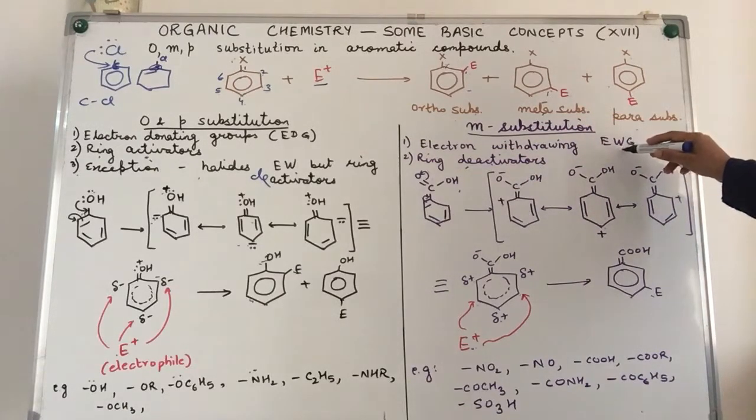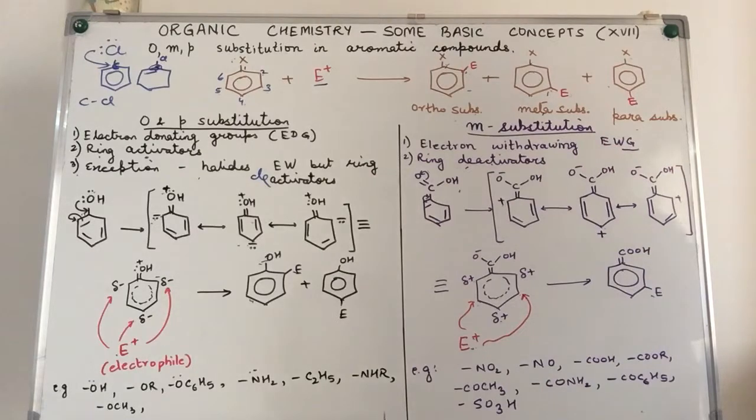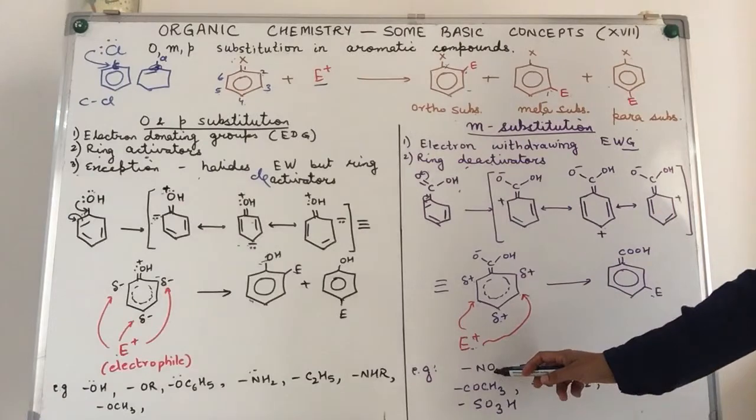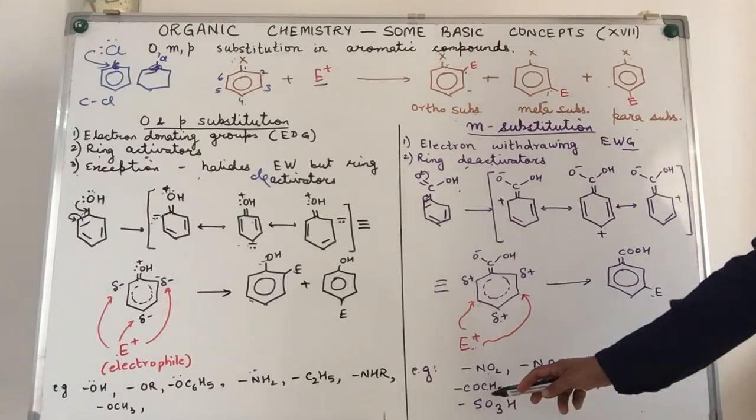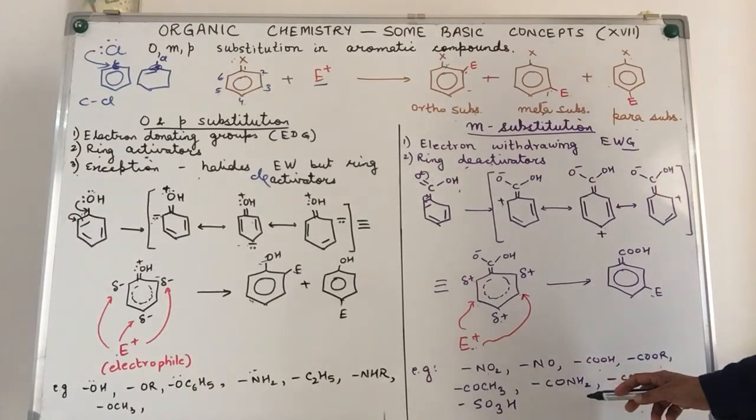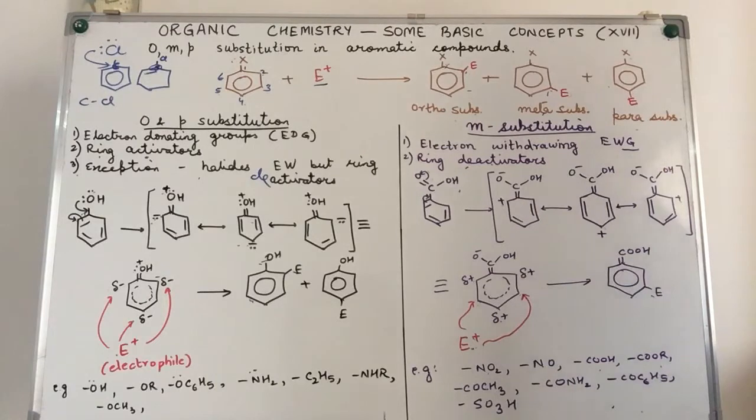So meta-substitution, they are electron withdrawing and they deactivate a ring towards further substitution. And these substitutions we are talking about halogenation, Friedel-Crafts alkylation, Friedel-Crafts acylation, nitration, sulfonation. If you see the video, electrophilic substitution reactions for aromatic compounds, you will be able to relate to these 5 types of substitution reactions. Examples of meta-substitution: nitro, nitroso, COH, COR, COCH3, amides. So these are some of the examples of meta-substitution.